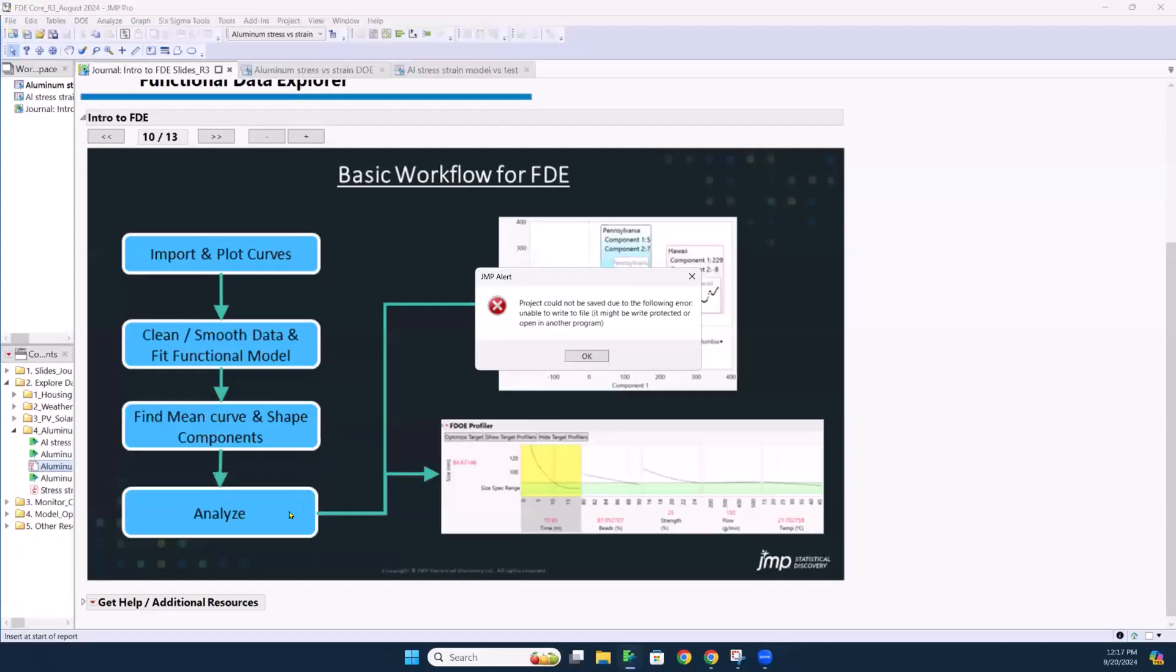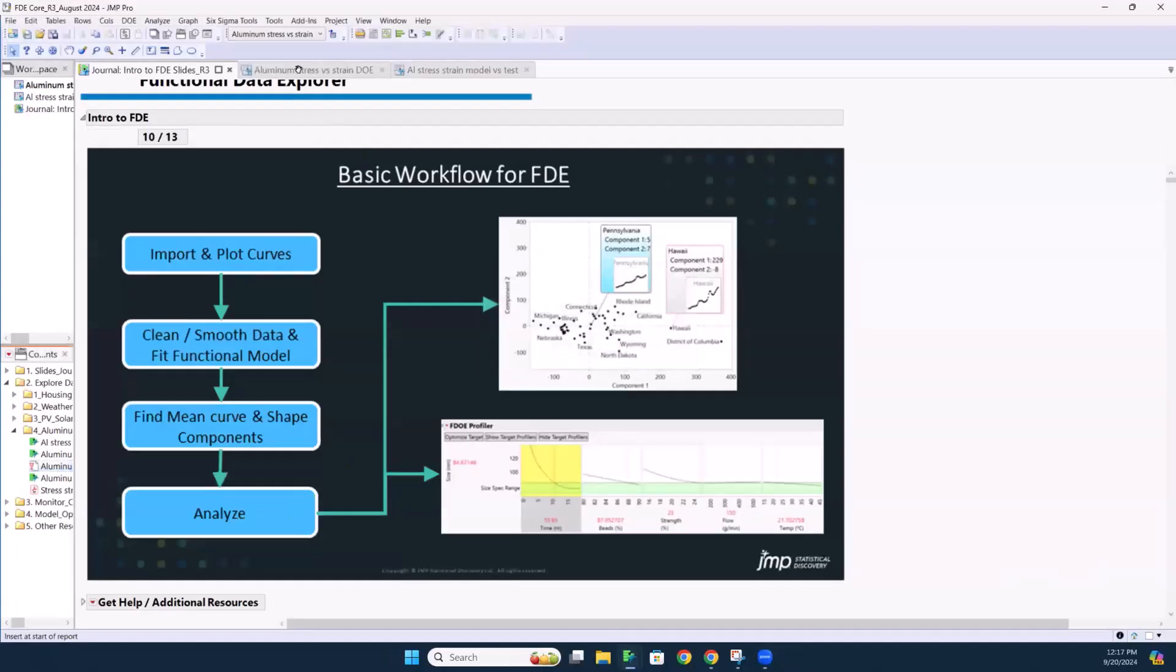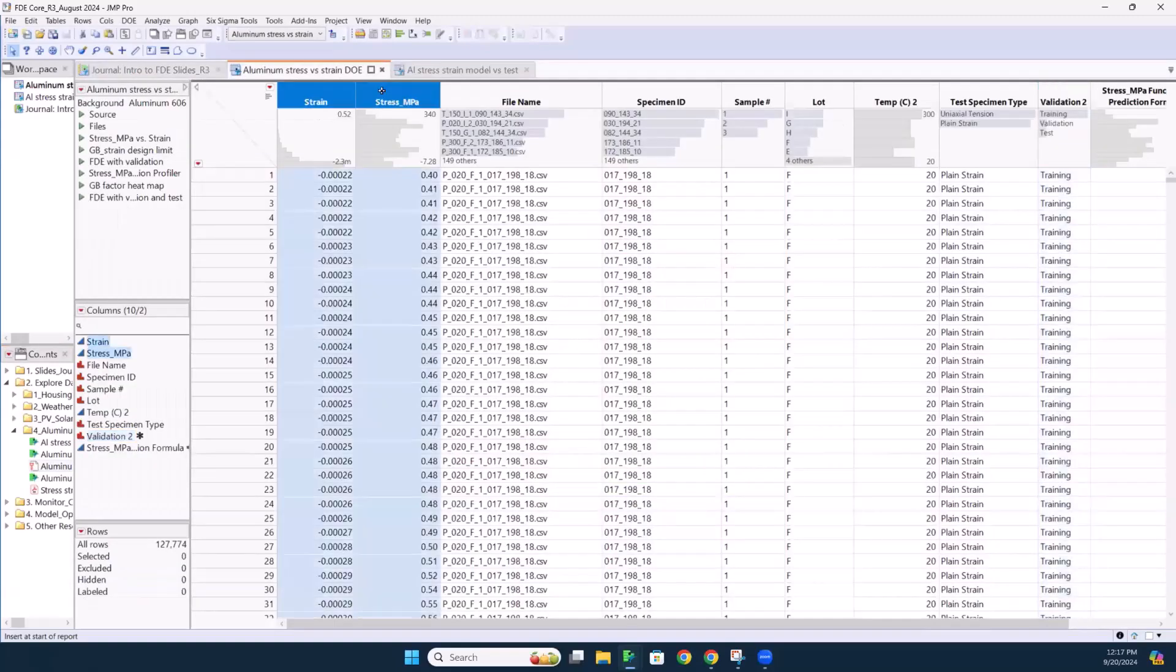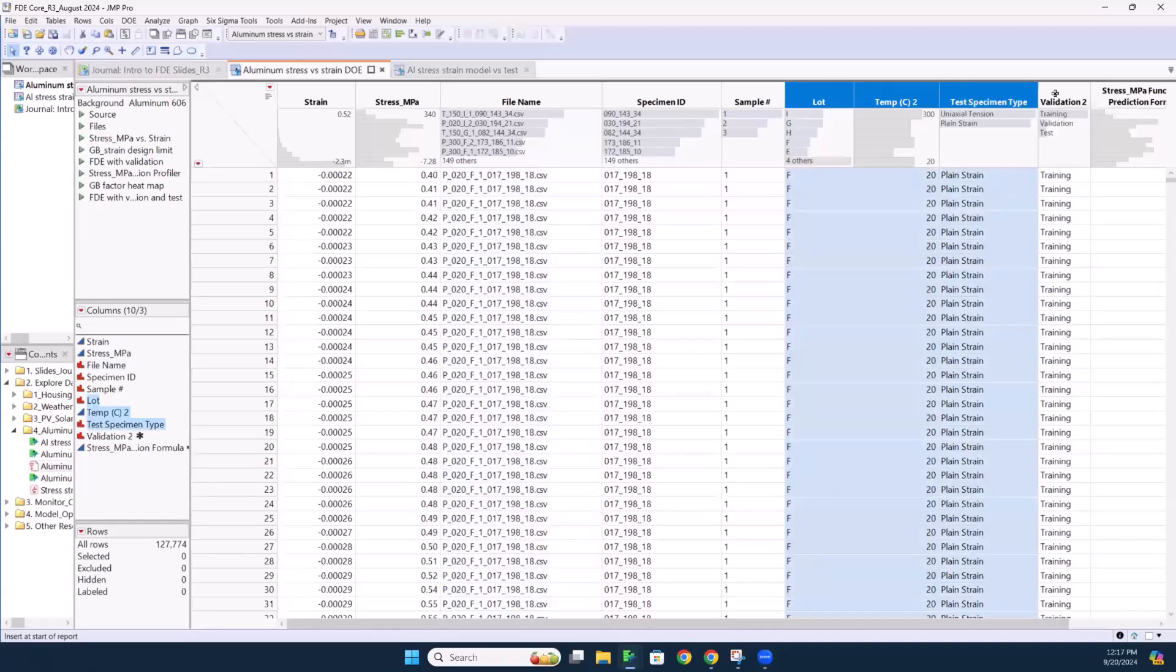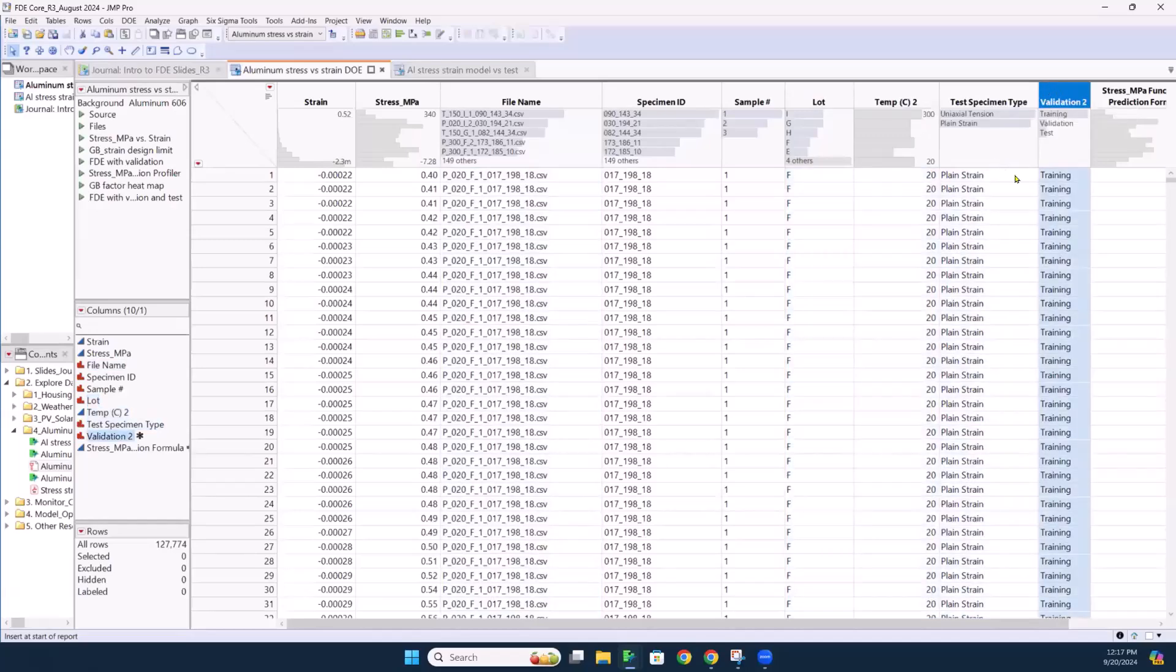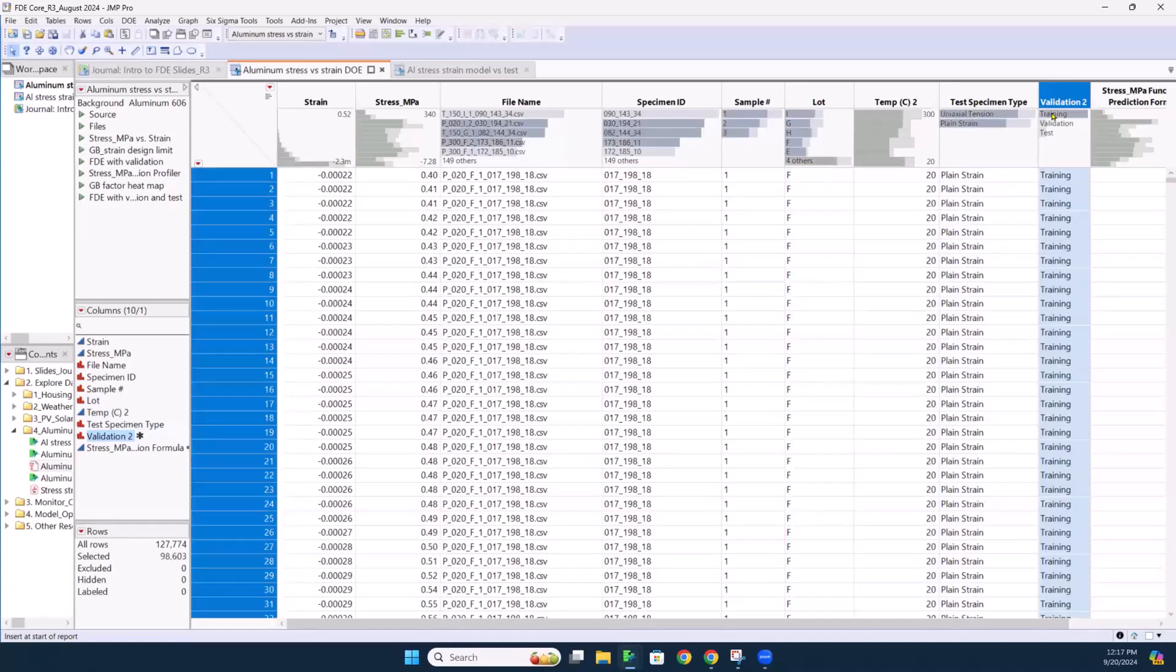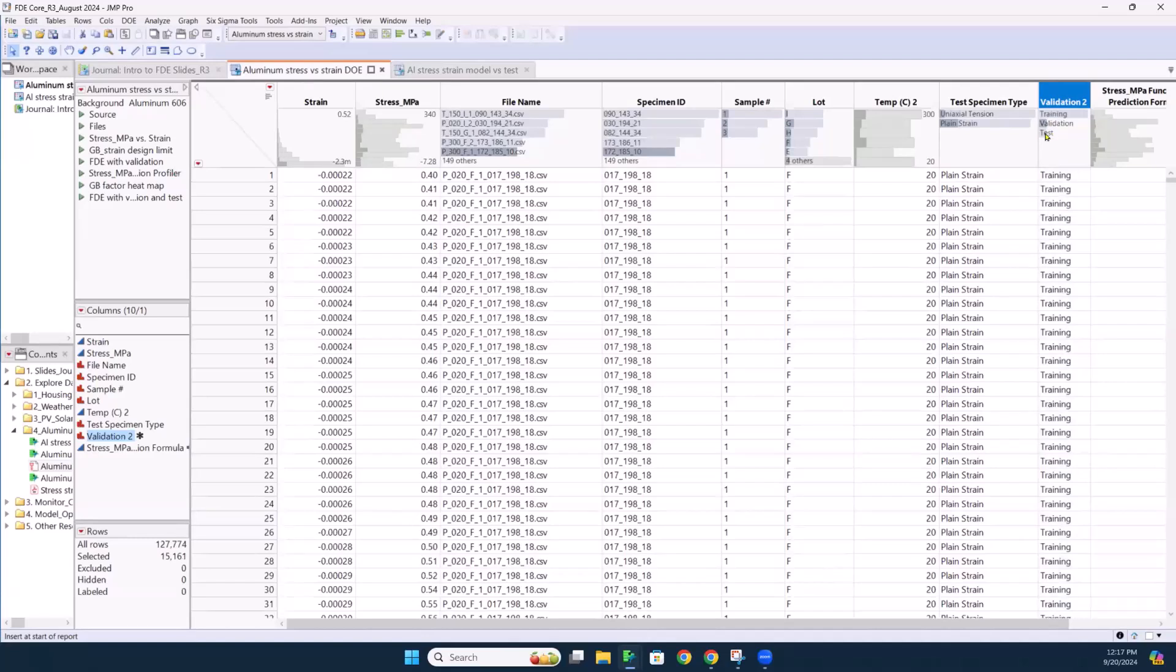All right, let's get into the data. Data table, stress strain. File name is just the individual tensile runs. And of course, we have our X's, our lot temp and test specimen. And I'm just going to note, I have a validation column here. So the model's being built on training data. It's going to get refined on validation. And then I did have a test set. So I held out a test set. So we could test how well the model fits on data it hasn't seen before.